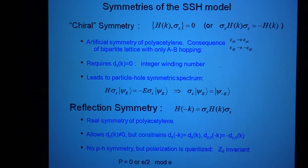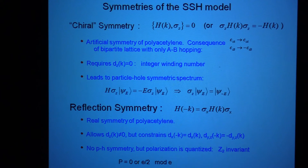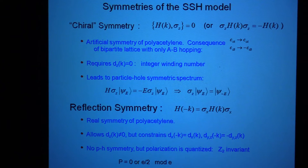But polyacetylene does have a real symmetry, which is reflection symmetry. If I reflect about the middle of a bond, then that is a real symmetry of polyacetylene. The reflection symmetry doesn't prevent D_z from being non-zero, but it does give a constraint that relates D at plus k and D at minus k.